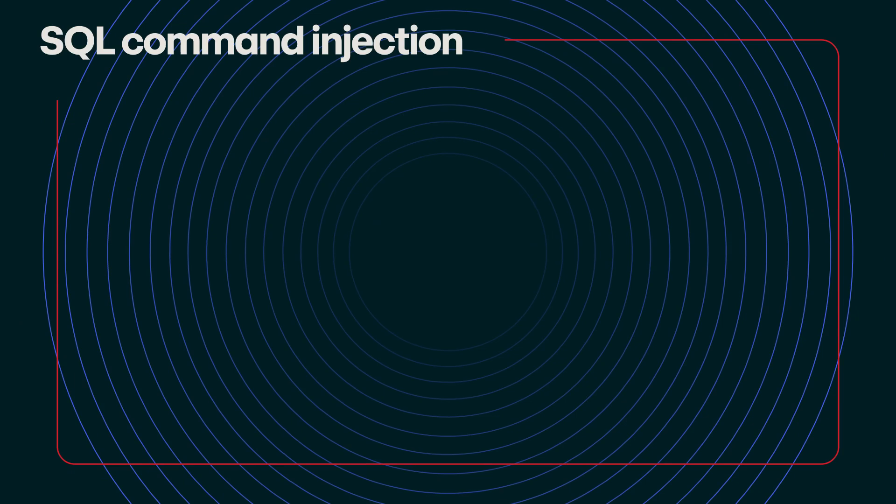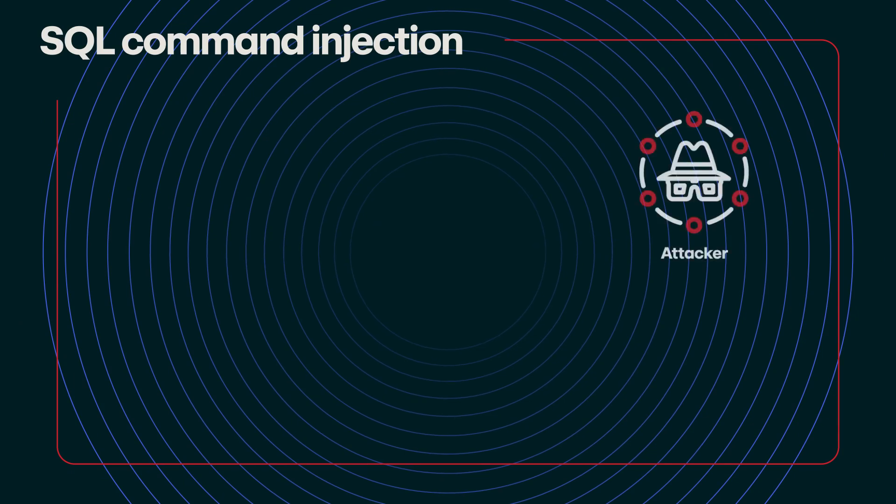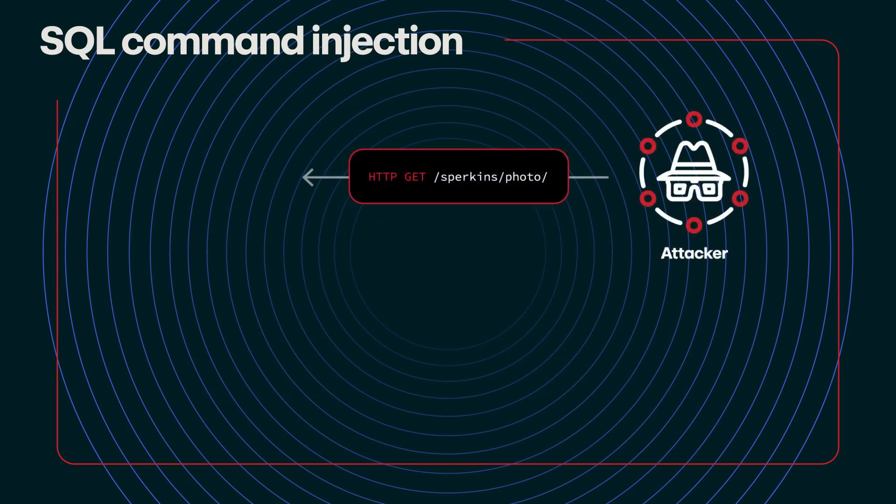A second web-based vulnerability that doesn't always get as much press, but is still really important, is something called SQL injection vulnerabilities. Believe it or not, it's possible to get code execution on database servers through web applications that are improperly secured. When you're using SQL injection inside web applications, you can usually execute arbitrary SQL statements.